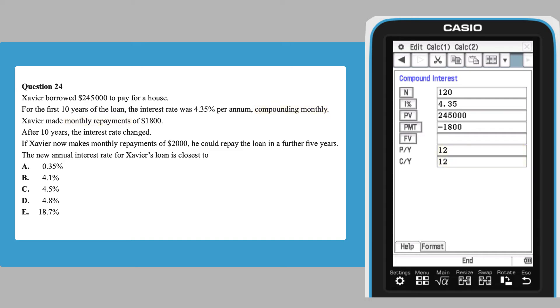With that done, tap the FV icon to find the value of the balance after 10 years. The negative value tells us that $108,219 is still owing to the bank.